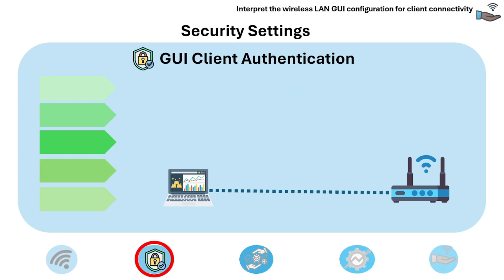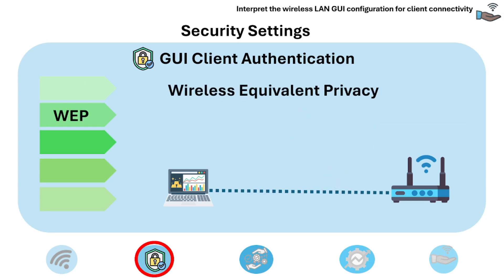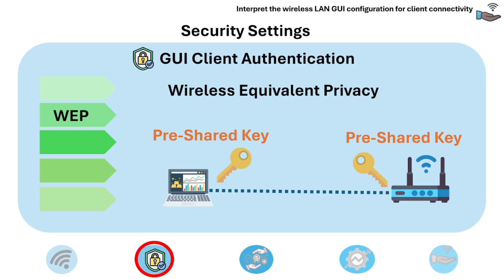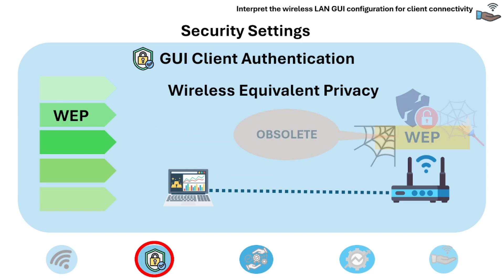Next is WEP, or Wireless Equivalent Privacy. It uses a static key and is easily compromised, making it unsuitable for modern networks. WEP is an older, outdated security protocol with known vulnerabilities and is generally considered obsolete.